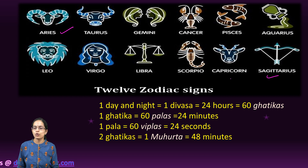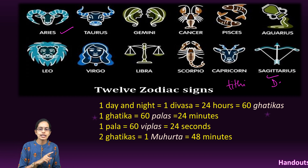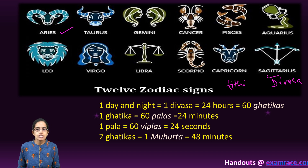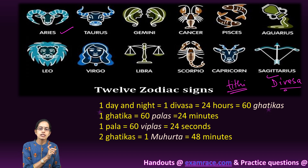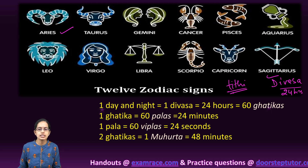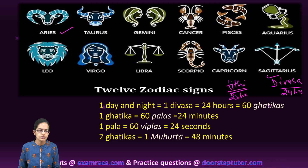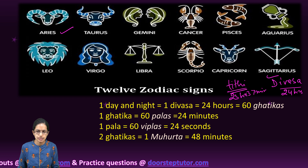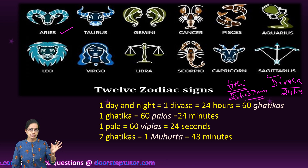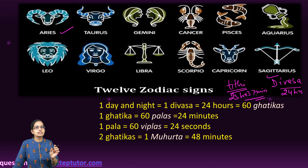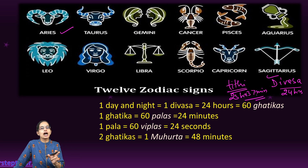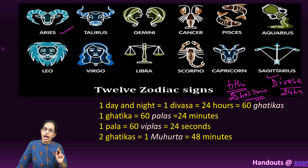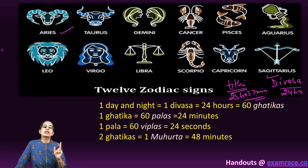The Hindi term for a lunar day is Tithi, while the solar day is known as Divas. Divas is 24 hours, but Tithi is only 23 hours and 37 minutes, making the lunar day shorter than the solar day. Tithi can be further divided into smaller units: Ghatika, Pal, and Vipal.